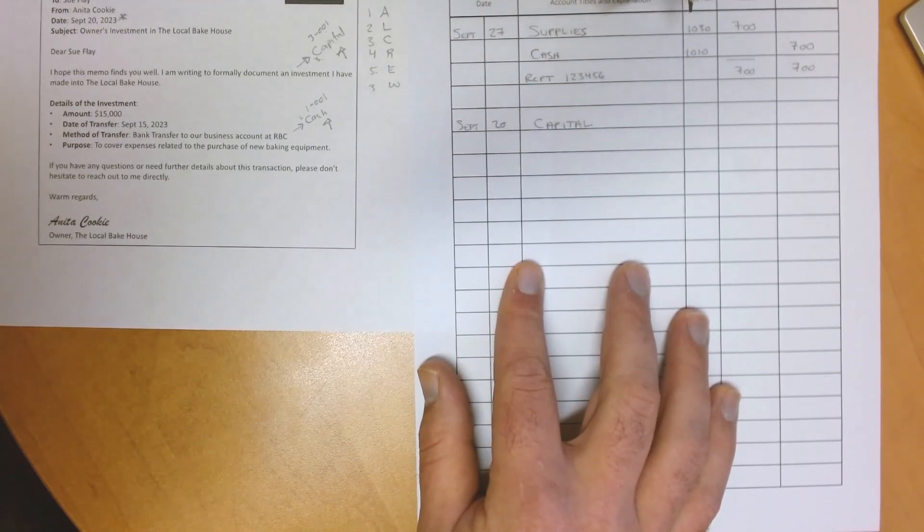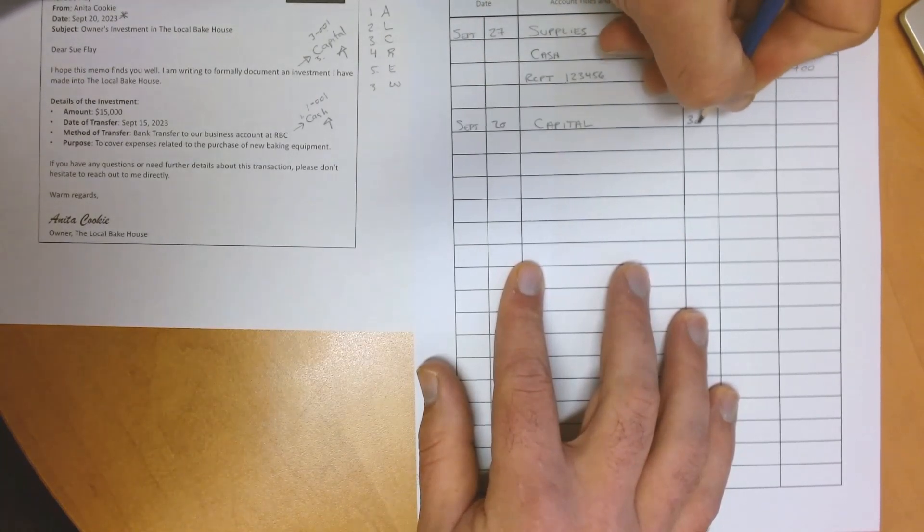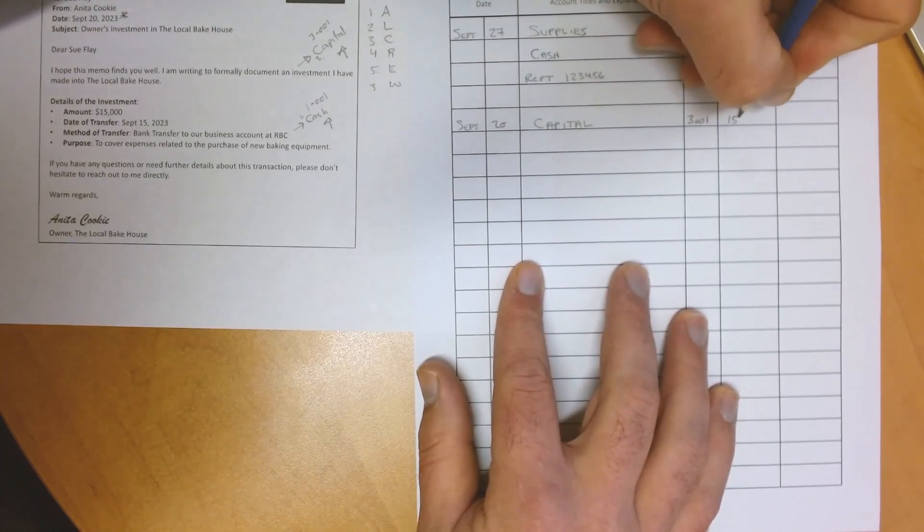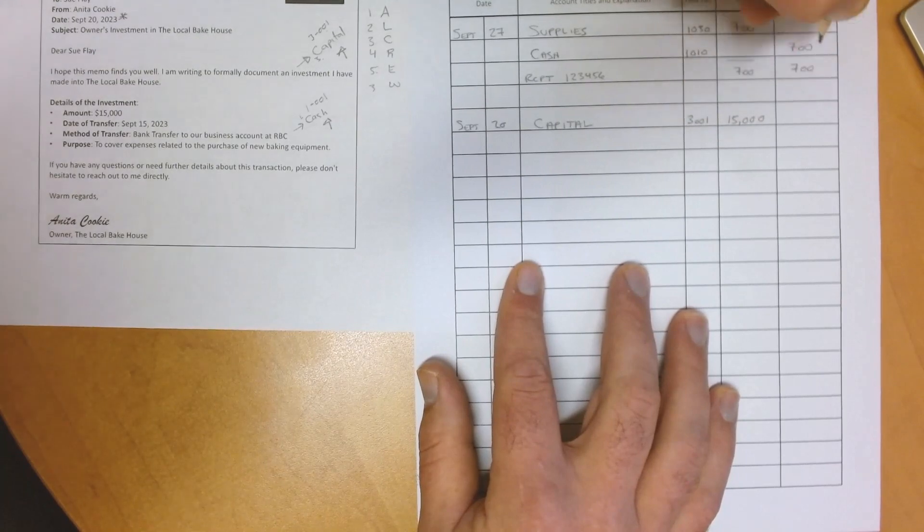Notice, I made a mistake when I started writing down the entry for my first account. Would I have made this mistake if I had used T-accounts first?